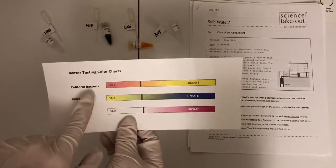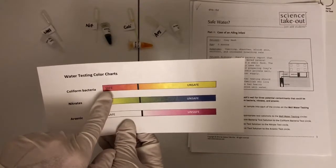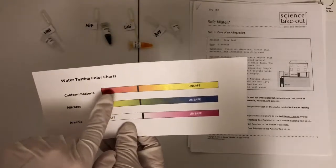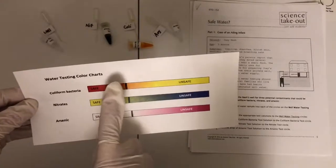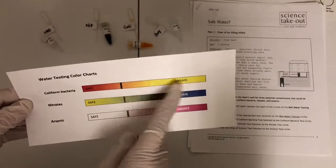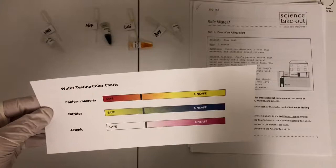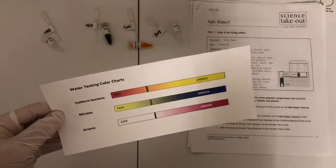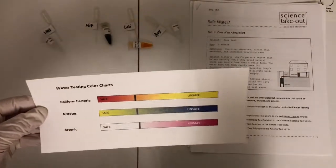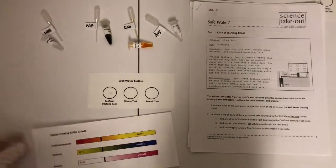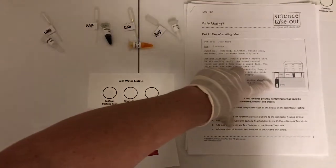So coliform bacteria samples that are very red to a dark orange color, that's considered safe. A lighter orange to a yellow, that is considered unsafe. So you're going to have to make the judgment call if coliform bacteria is in Joey's well water.